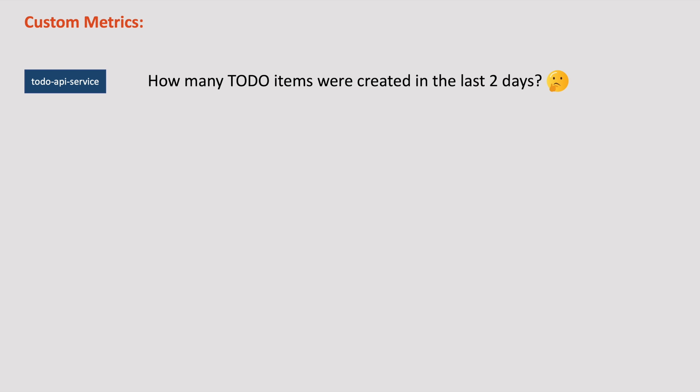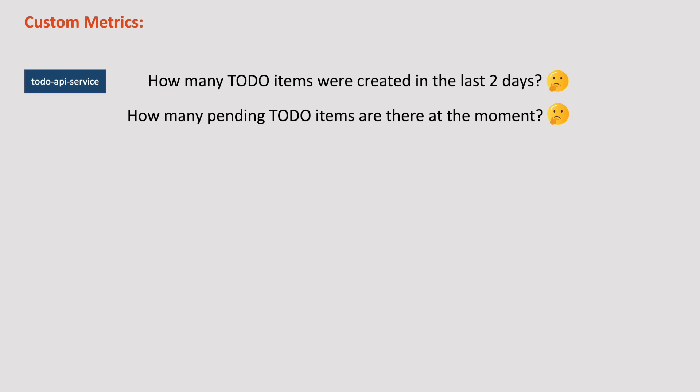However, there are times when we need custom metrics for our application — in our example for our to-do application, like the number of to-do items created in the last two days or the number of pending items at the moment. How do we get such metrics? That's our topic today.